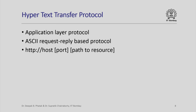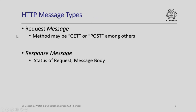The hypertext transfer protocol has been the key for all information exchange and interaction between computers connected on a network. It is an application layer protocol and essentially an ASCII-coded, request-reply based protocol. Typically you write: http colon slash slash host, followed by a port number, followed by a path to the resource. There are HTTP message types called request message and response message. A request message might be a GET — to get something — or a POST — to post something to the other side. A response message conveys the status of your request and the message body.